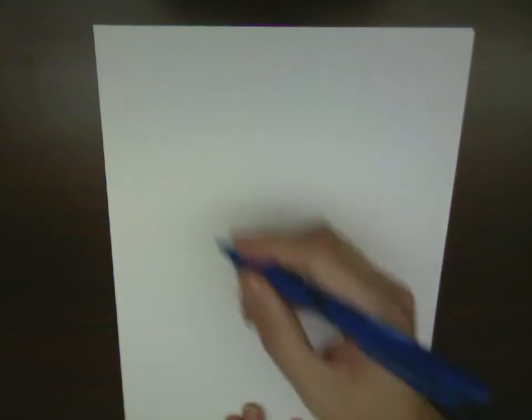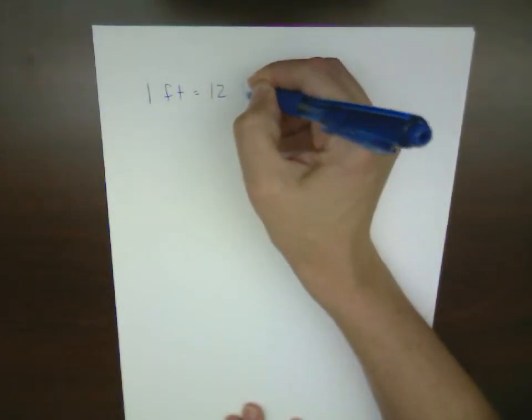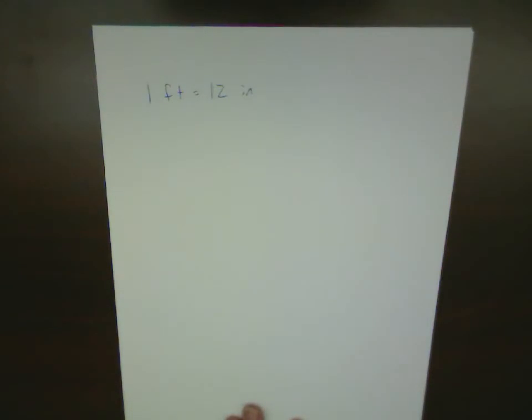Let's start with a well-known conversion factor: 1 foot equals 12 inches. That's one we're really familiar with here in the United States. So let's say we've got a quantity, we've measured something.